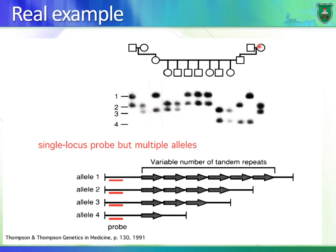Looking at the second family, the grandmother has alleles two and three, and the grandfather has alleles one and four. You would expect this boy to have either one of these two alleles from each parent — and that's true: he got allele number two from his mother and allele number four from his father.